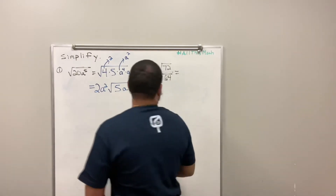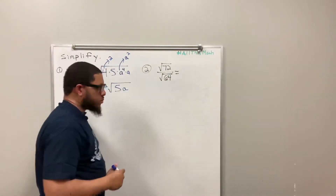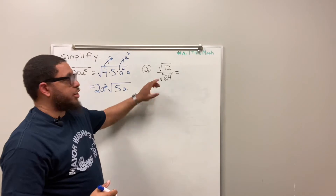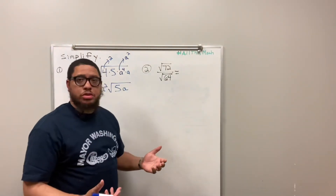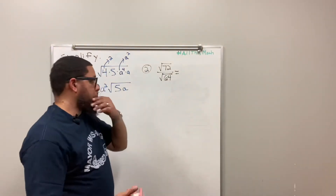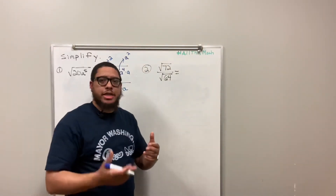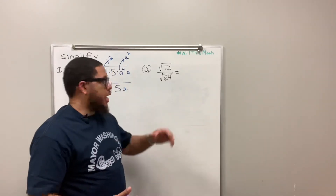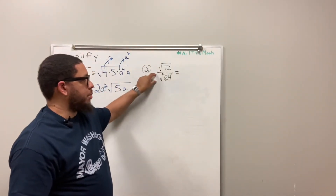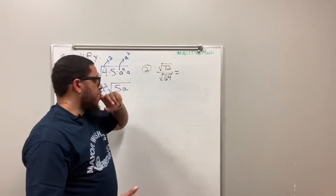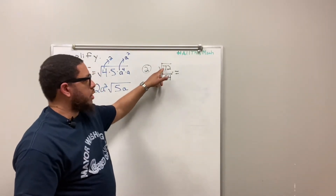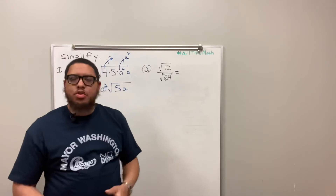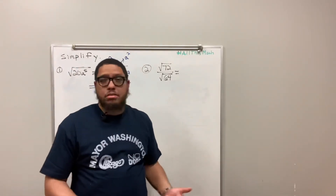Now let's look at number 2. Number 2 is a fraction — we got a numerator and a denominator, and they're both square roots. I tend to look at these as two separate problems. I deal with the numerator first, then the denominator. So first I look at 72 and ask myself, is 72 a perfect square? And I say no, because I know 64 is a perfect square and 81 is a perfect square, and 72 is in between them.